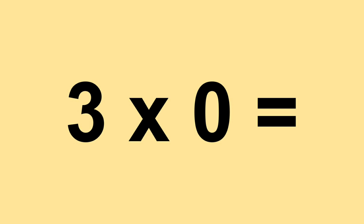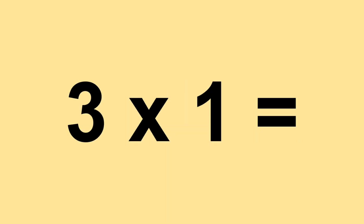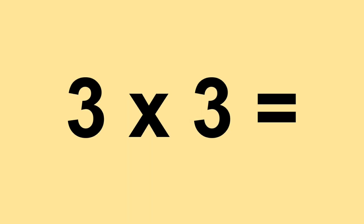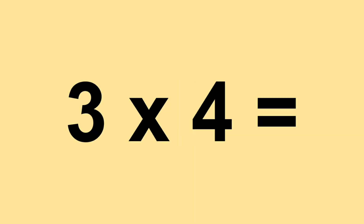Three times zero equals zero. Three times one equals three. Three times two equals six. Three times three equals nine. Three times four equals twelve.